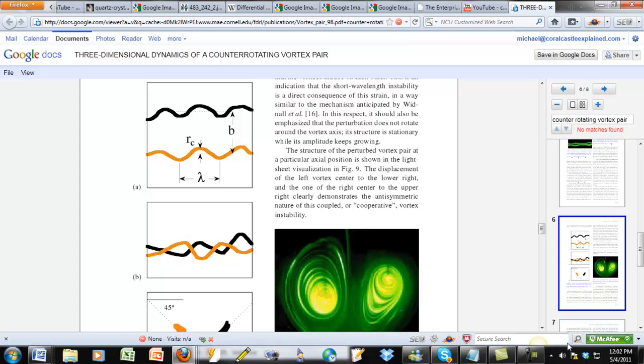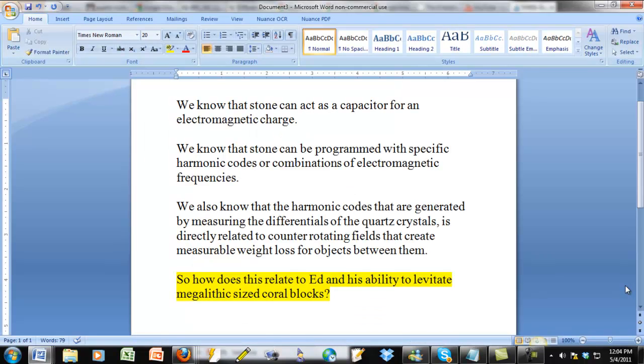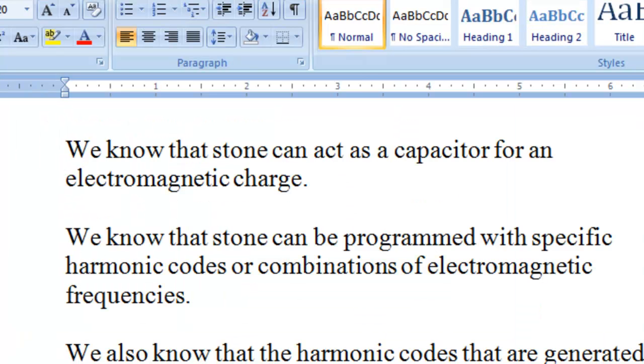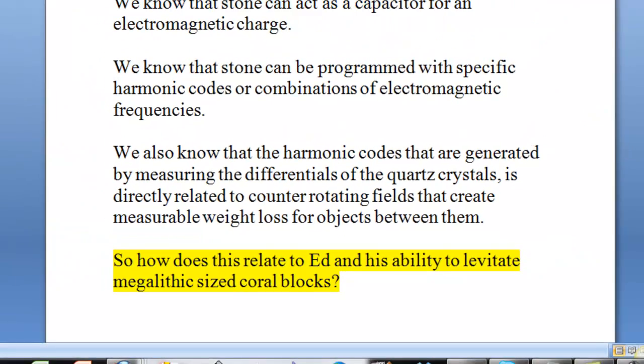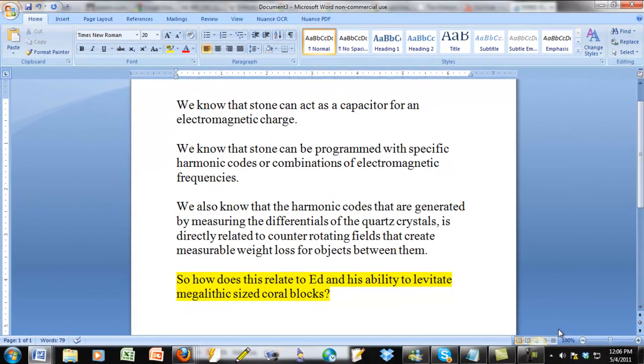With all of that stated, let me summarize how all of this relates to the Coral Castle. First, we know that stone can act as a capacitor for an electromagnetic charge. Second, we know that stone can be programmed with specific harmonic codes or combinations of electromagnetic frequencies. And finally, we also know that the harmonic codes that are generated by measuring the differentials of quartz crystals is directly related to counter-rotating fields that create measurable weight loss for objects in between them. So how does all of this relate to Ed and his ability to levitate megalithic-sized stones?